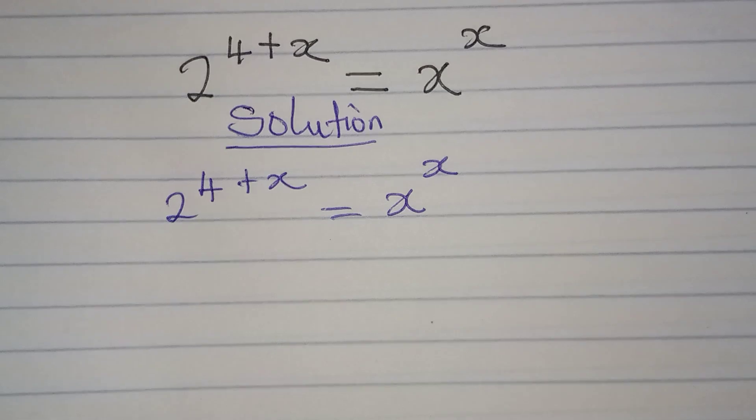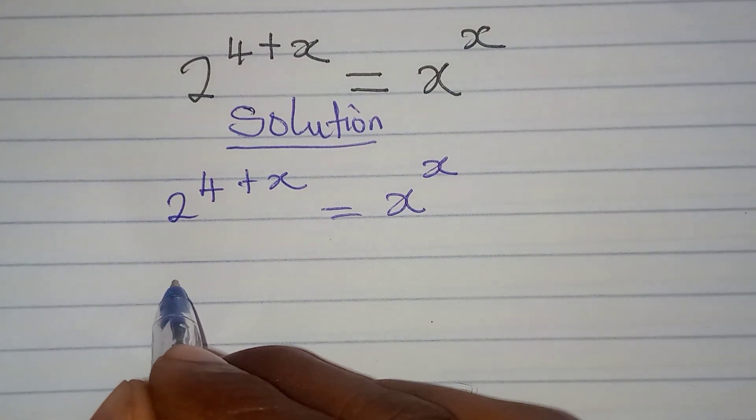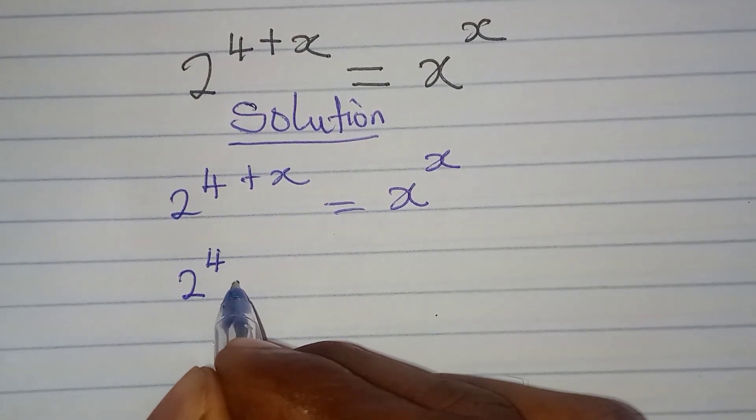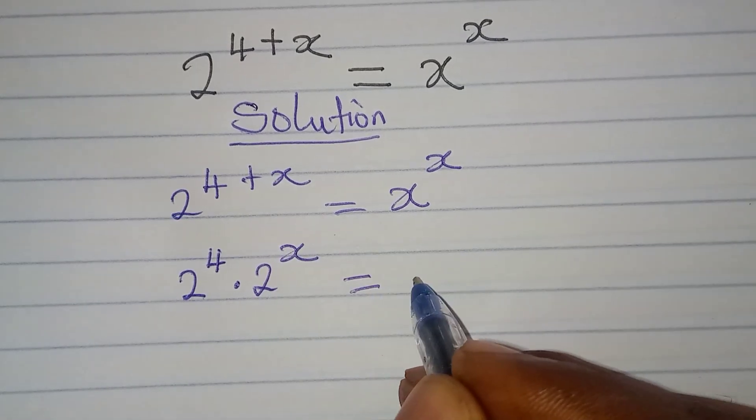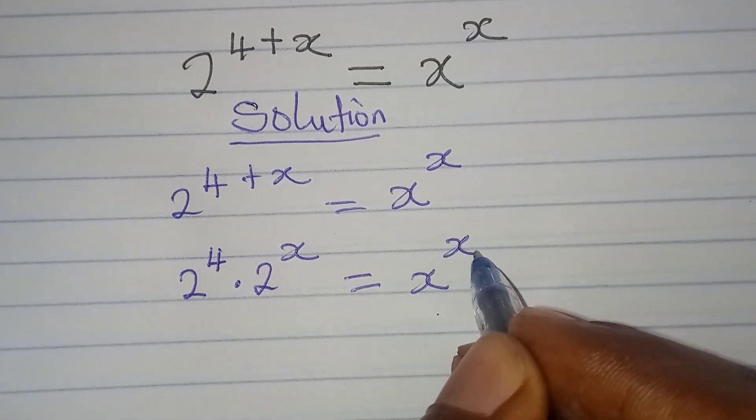Okay, so let's take a step. This is the same thing as 2 to the power of 4 plus 2 to the power of x, and this is equal to x to the power of x.